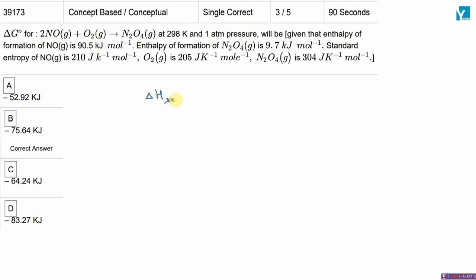So, delta H for the reaction will be enthalpy of formation of N2O4 minus twice the enthalpy of formation of NO.